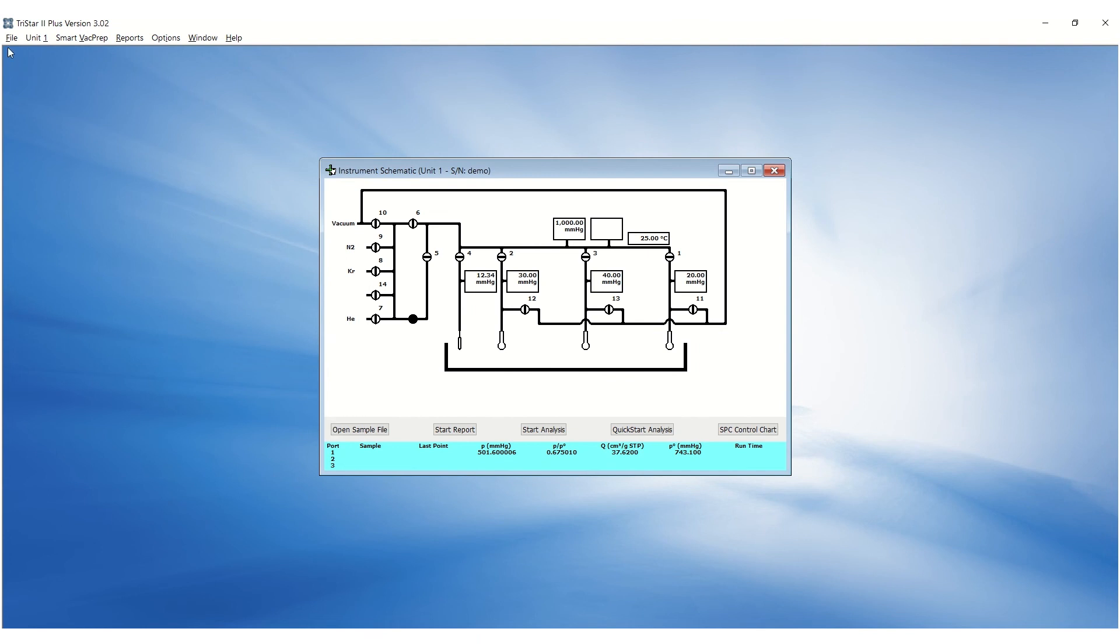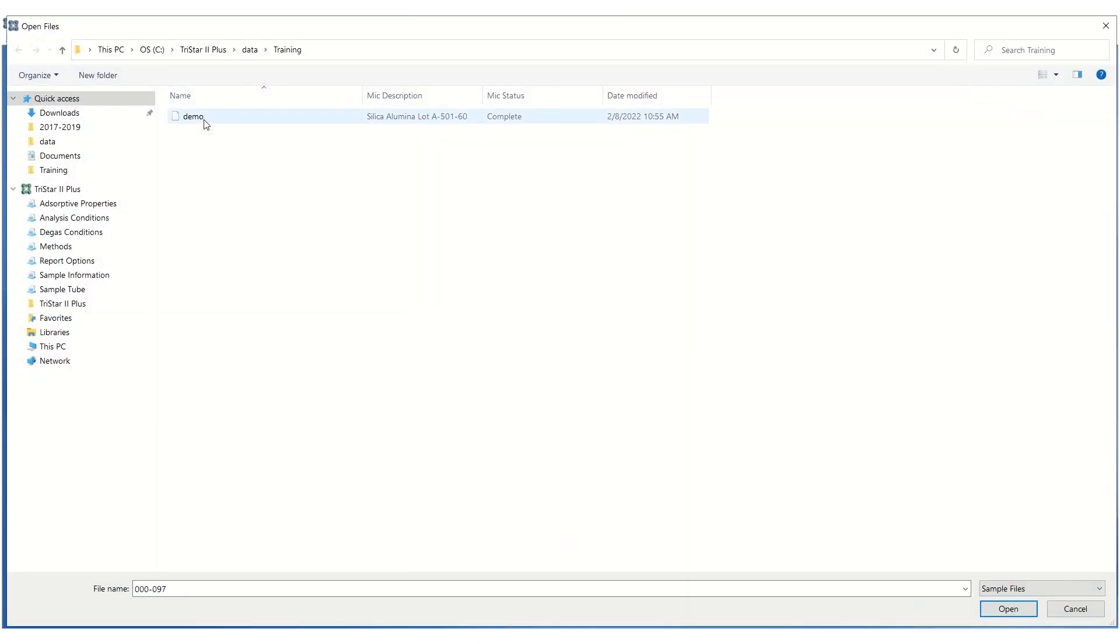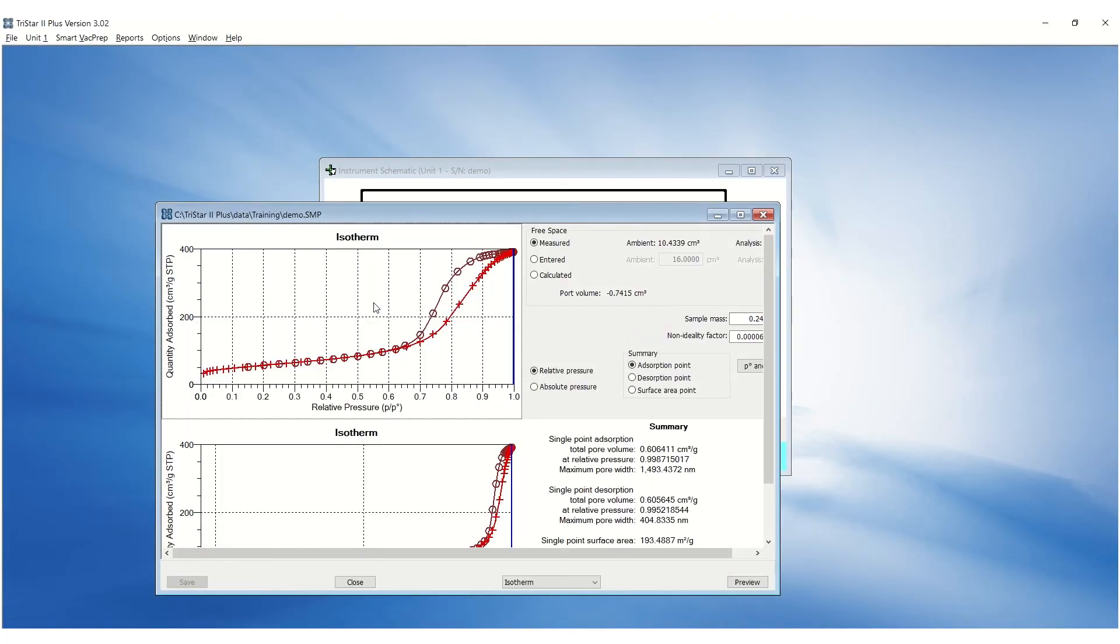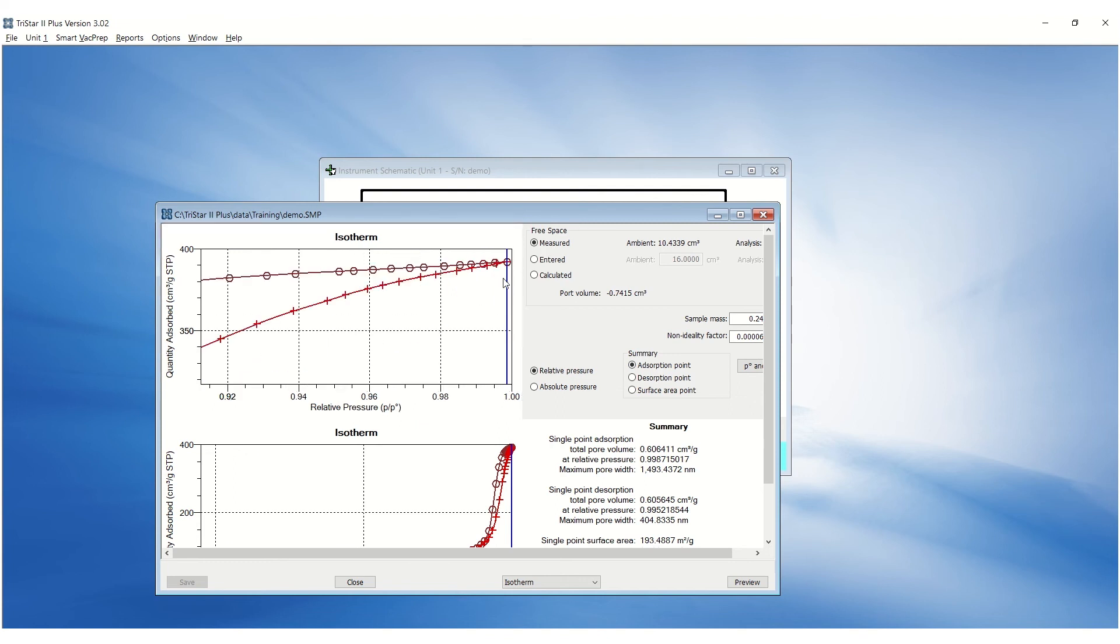Once the analysis is complete, go to File, Open and open the sample file. For the Silica Alumina, the total pore volume for adsorption and desorption can be changed by selecting adsorption point or desorption point and adjusting the blue bar. Adjust the adsorption point to the highest adsorption point pressure and the desorption point to the second highest desorption point pressure.